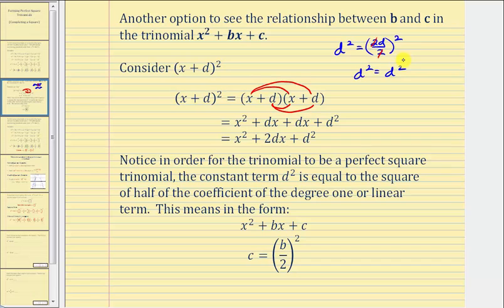This means if we have a trinomial in the form x squared plus bx plus c, the constant term c must equal half of b, squared — that is, c equals (b divided by 2) squared. Here, b is the coefficient of the degree one, or linear, term.